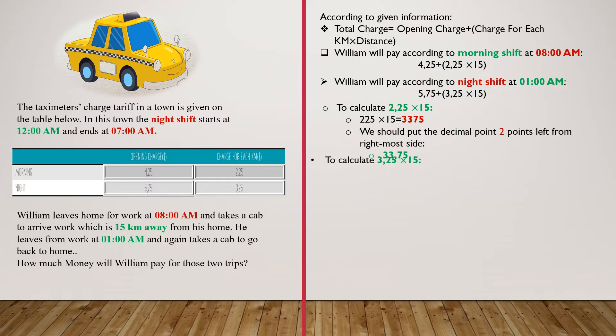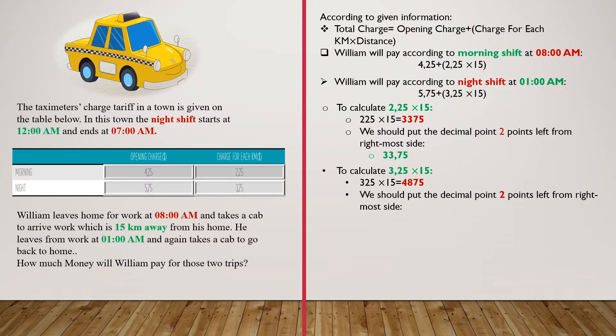To calculate 3.25 multiplied by 15, we should first multiply 325 by 15, and we know that it's equal to 4875. Now we should put the decimal point 2 places left from the rightmost side, and the result will be 48.75 for this operation.